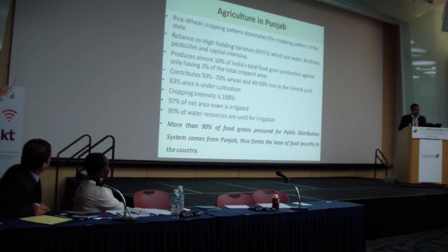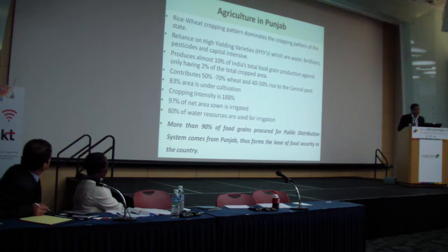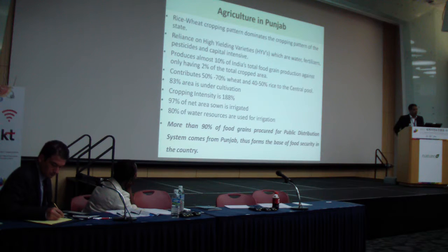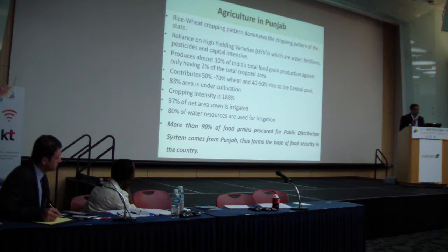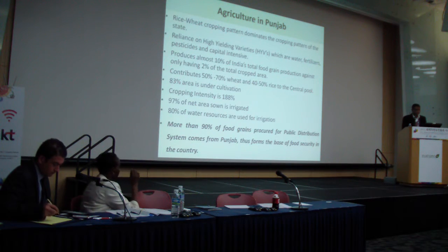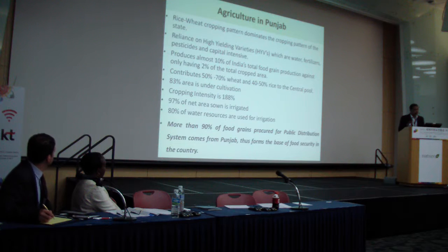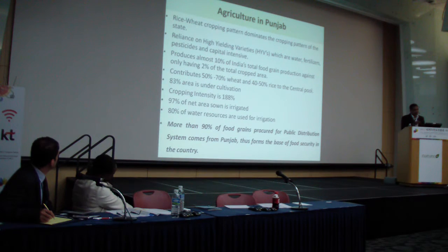In Punjab, there is heavy reliance on high-yielding variety seeds, which are very water-, fertilizer-, and capital-intensive. Punjab adopted these new high-yielding variety hybrid seeds, and now produces almost 10% of total food grain in India despite having only 2% of India's total area. It contributes almost half of the total food to the central food pool, from which the Indian government distributes food to the rest of the country.